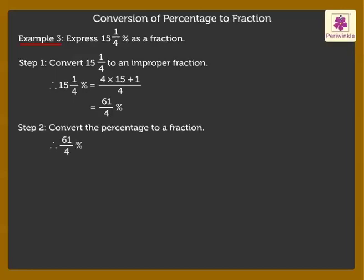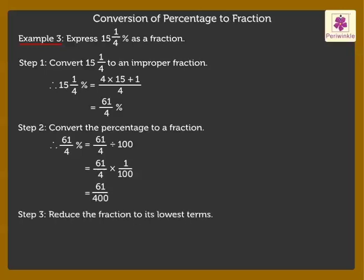Step 2: Convert the percentage to a fraction. Hence, 61 upon 4% is equal to 61 upon 4 divided by 100, which is equal to 61 upon 400. Step 3: Reduce the fraction to its lowest terms. Here, we cannot reduce 61 upon 400. Therefore, 15 and 1 upon 4% is equal to 61 upon 400.